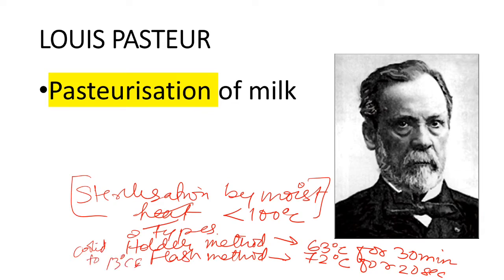This is sterilization by moist heat that is below 100 degrees Celsius — this is important, we have to remember this. The key point is that moist heat is below 100 degrees Celsius, and there are two types of pasteurization methods.